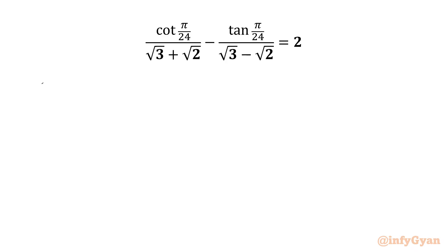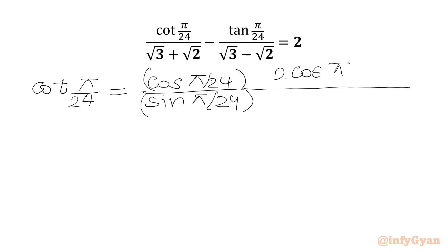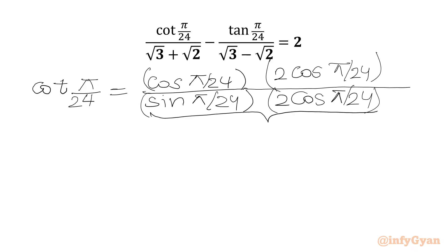So let's get started by writing cot(π/24). Now we know that cot θ is cos θ over sin θ. So we can write cos(π/24) over sin(π/24). Now I will multiply our numerator and denominator by 2cos(π/24), so that we can apply the double angle formula in the denominator. If we multiply these two terms we will get 2 sin θ cos θ, and we know that 2 sin θ cos θ is equal to sin 2θ.